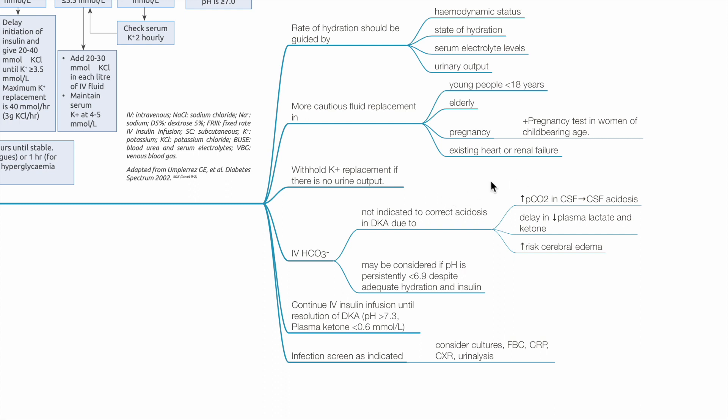Bicarbonate is not recommended for correction of acidosis as IV bicarbonate increases pCO2 in CSF leading to CSF acidosis, causes delay in reduction of plasma lactate and ketones, and increases the risk of cerebral edema. IV bicarbonate can be considered if pH is persistently less than 6.9 despite adequate hydration and insulin. Continue IV insulin until resolution of DKA which is defined as pH more than 7.3 and plasma ketone less than 0.6 mmol per liter. Infection screen as indicated. Consider cultures, FBC, CRP, chest x-ray, and urinalysis.